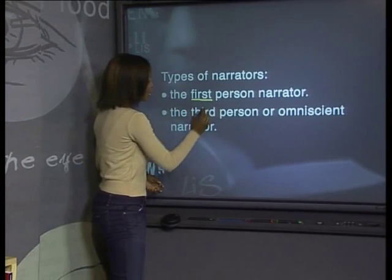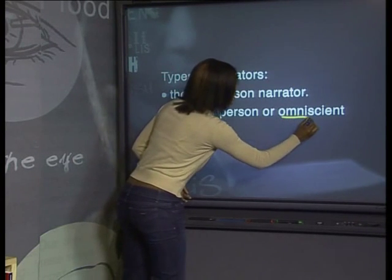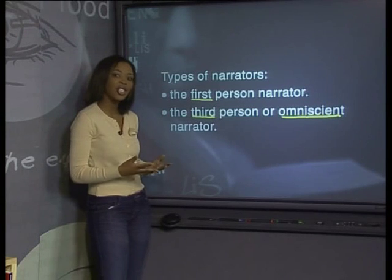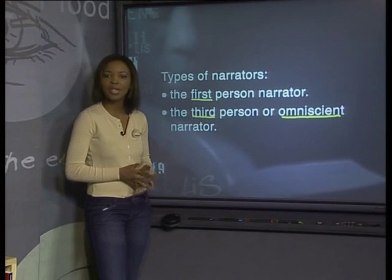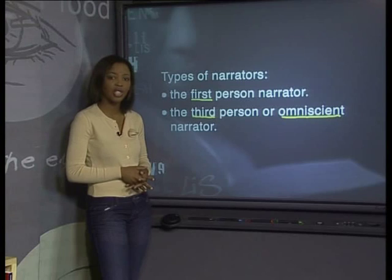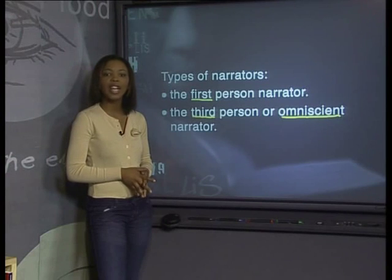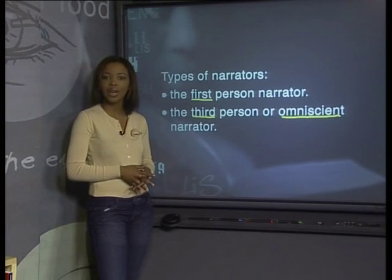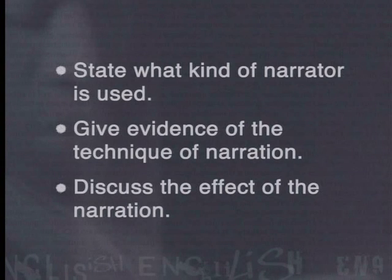First person narrator, third person narrator, or omniscient narrator — it is important that you know these terms and how narration works in stories, as it affects the way in which a story is told. To illustrate examples of the different types of narration and to prepare you for questions on narration, we are going to look at two extracts. Here are examples of the type of question you may have to answer on narration in a literature test or exam: state what kind of narrator is used, give evidence of the technique of narration, and discuss the effect of the narration on the reader.